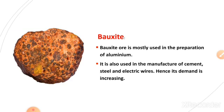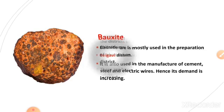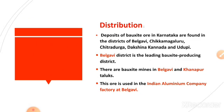Bauxite is mostly used in the preparation of aluminium, which is a lightweight metal. It is also used in the manufacture of cement, steel, and electrical wires. These products have high market demand, so the demand for bauxite has also increased. Kanapur Taluk in Belagavi district is the leading producer of bauxite in the state, and this ore is used in the Indian Aluminium Company factory at Belagavi.